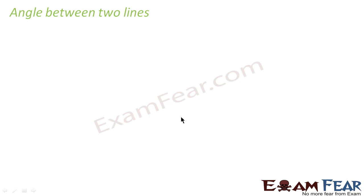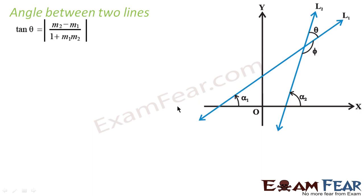Now let's understand angles between two lines. If we are to find the angle between two lines, then we can say tan theta is equal to m2 minus m1 by 1 plus m1 m2.